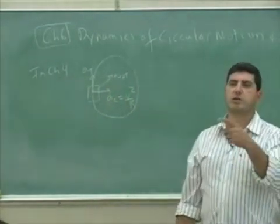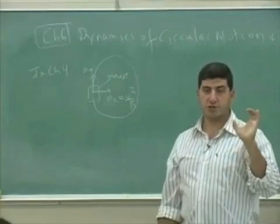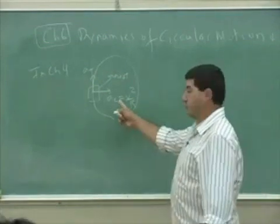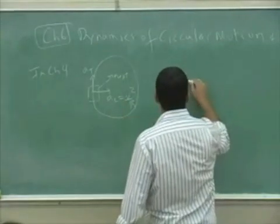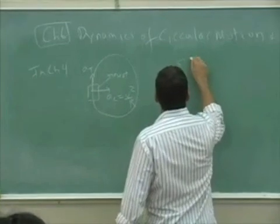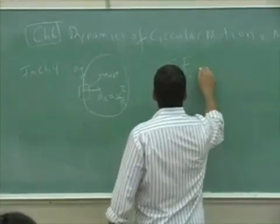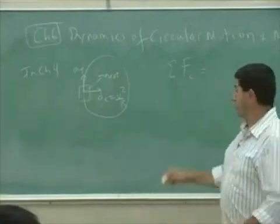So we'll assume that the object is going around uniform circular motion, and we will just concentrate on the centripetal acceleration. So we're going to say when an object is going around a circle, the sum of the forces on it must be equal to MV squared over R.